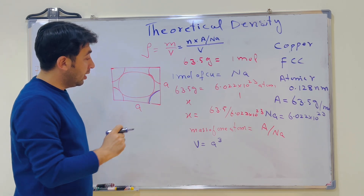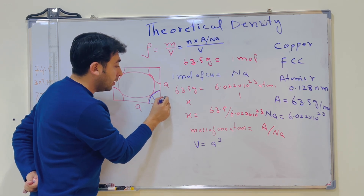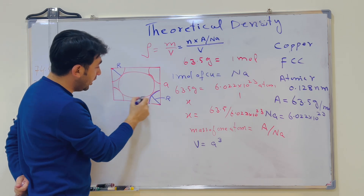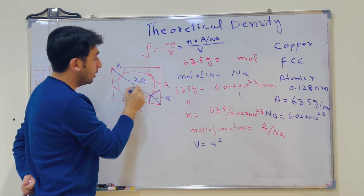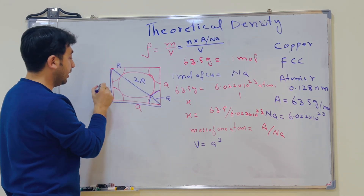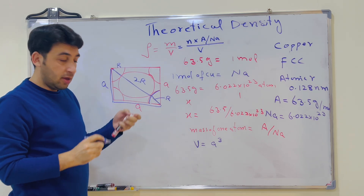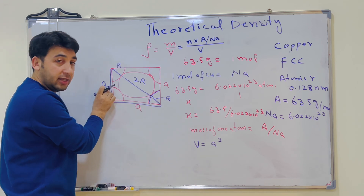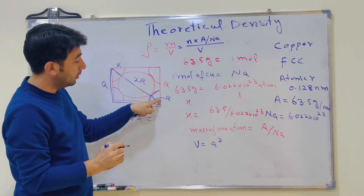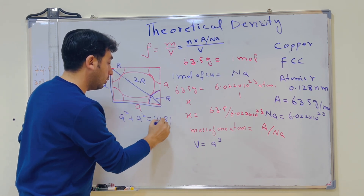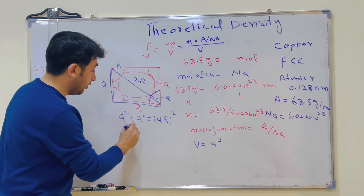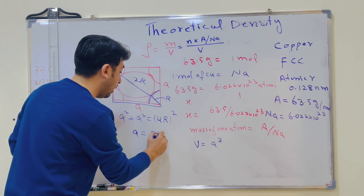From one corner atom to the next, we have one radius r on one side, then two radii (2r) for the center atom, and another r on the other side — giving us 4r along the face diagonal. Making a right-angle triangle from corner to corner, with both legs equal to a, we apply the Pythagorean theorem: a² + a² = (4r)². This is three-dimensional geometry. Solving for a gives us a = 2r√2.